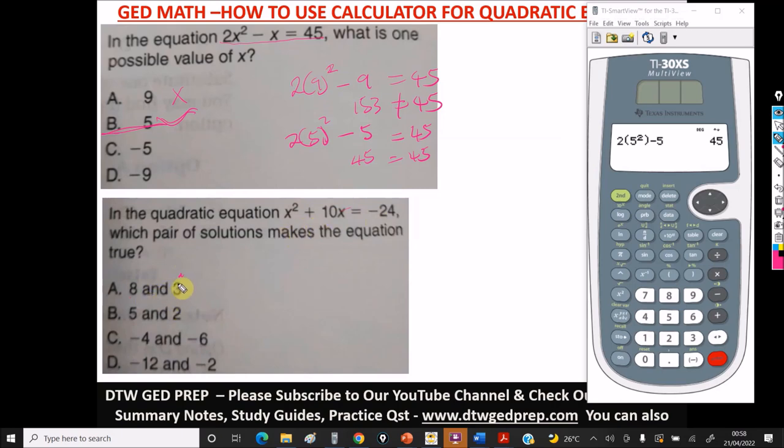So let's say for option A, let's pick 3. So 3² + 10(3), will it be equal to -24? This is 3 squared, that's 9. 9 plus 30, this is 39. So it is not correct, so this option is wrong. If 3 is wrong, it means 8 also is wrong because the two pair of solutions must resolve to give us -24.